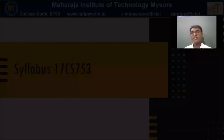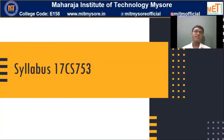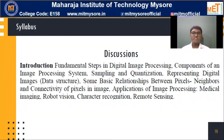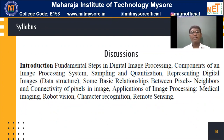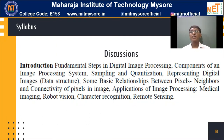With this understanding, we will now look at what topics we are going to learn in the coming semester. The subject code is 17CSS753. In the first module, you will learn about the fundamental steps in digital image processing, components of digital image processing, sampling and quantization methods, how to represent a digital image, and basic relationships between pixels and neighbors — connectivity of pixels in an image, applications in medicine, robot equations, character recognition, and remote sensing.